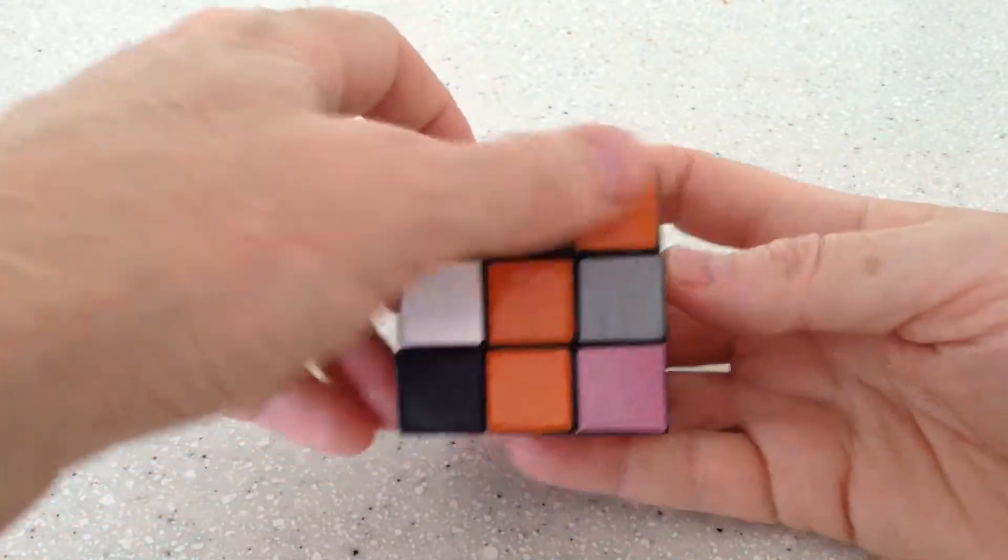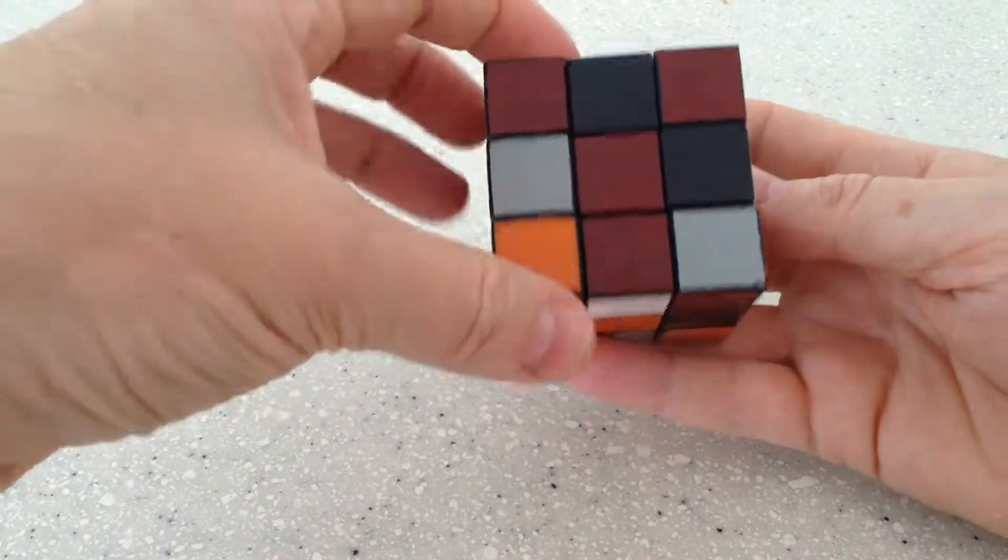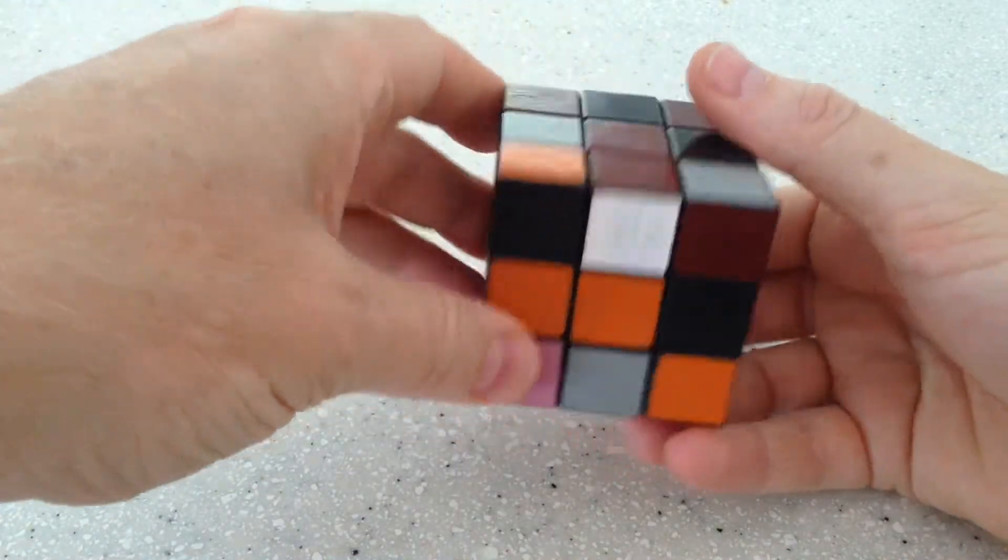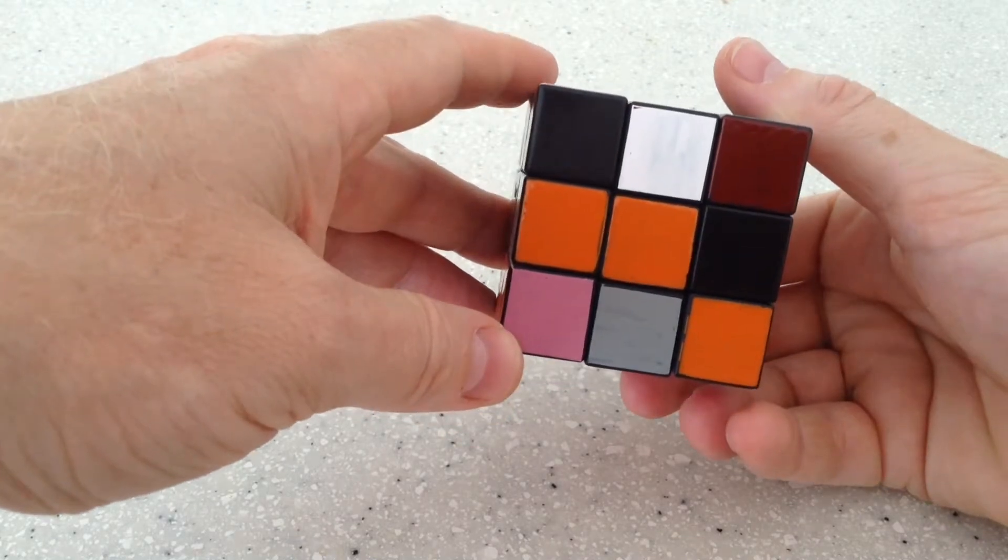So the four bottom layer corners are positioned correctly and now we simply need to reorient them.